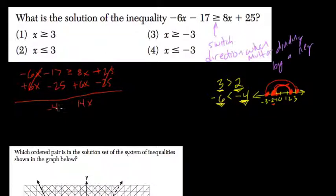Negative 17 minus 25 is like 17 plus 25, except negative. So that's negative 42. And it's greater than or equal to 14x. Divide both sides by 14,